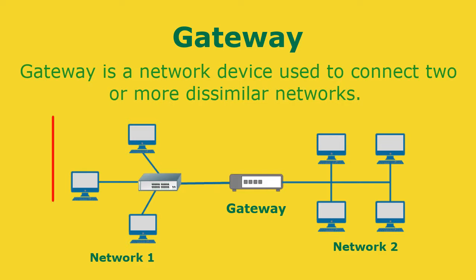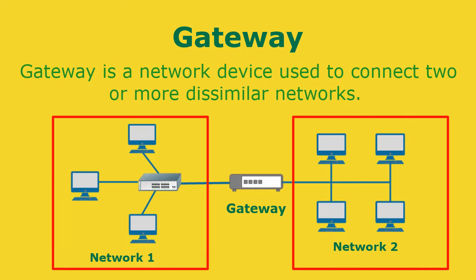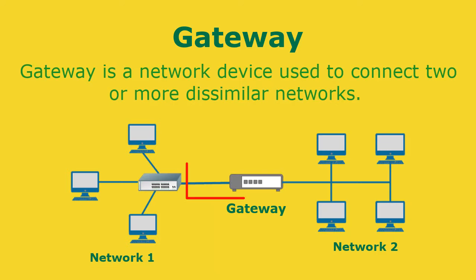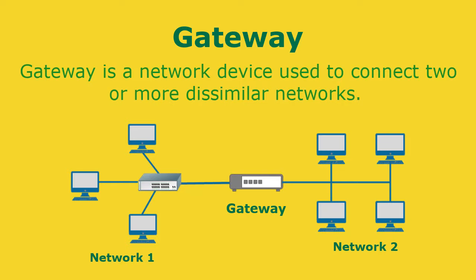A gateway is a network device used to connect two or more dissimilar networks — that is, networks that use different protocols. It establishes an intelligent connection between a local network and an external network. A gateway usually is a computer with multiple NICs connected to different networks. For a large enterprise, this computer can also act as a proxy server.